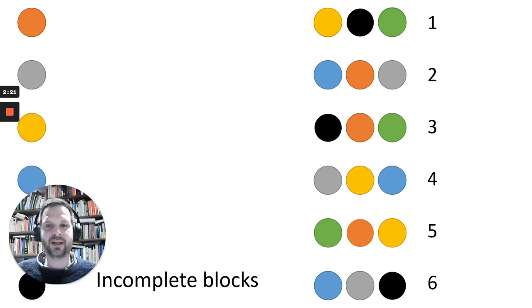And then this is called incomplete blocks, this kind of design. So not all of the farmers see all of the varieties. They only see one part of the elephant. So to say they each fill one part of it and together we're going to reconstruct the whole picture.